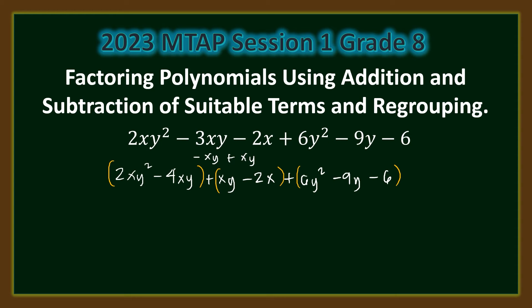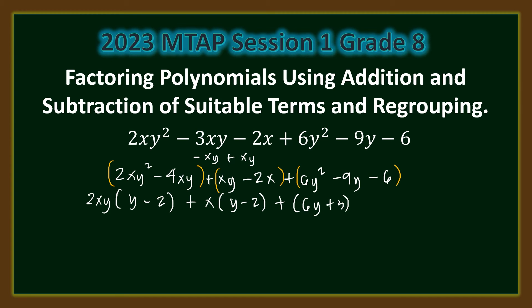In the first group, 2xy is a common monomial factor, giving 2xy times (y minus 2). In the second group, x is a common monomial factor, giving x times (y minus 2). The trinomial 6y² minus 9y minus 6 can be factored as (6y plus 3) times (y minus 2).